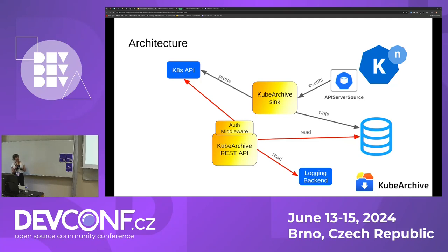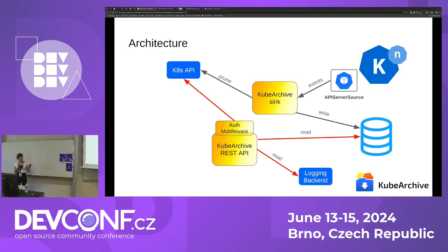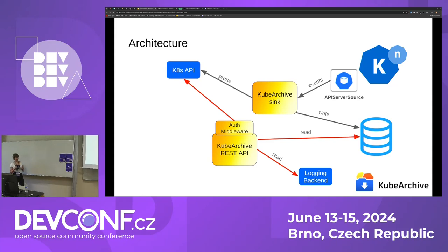We have the writer; now we need a reader. This is going to be a REST API — the kubearchive REST API — responsible for reading from the database and also integrating with logging backend systems. It's written in Go as well, and we took advantage of the Gin framework, which is one of the most popular frameworks for writing REST APIs in Go.